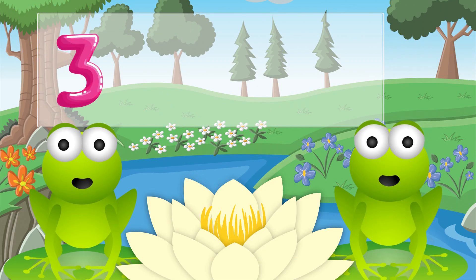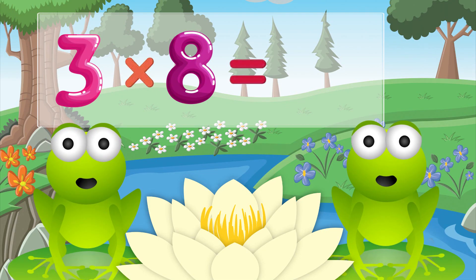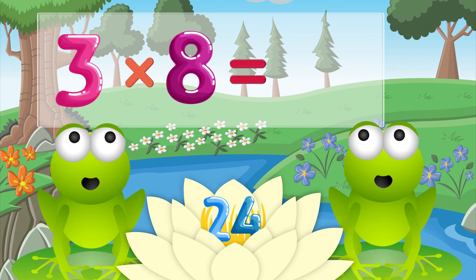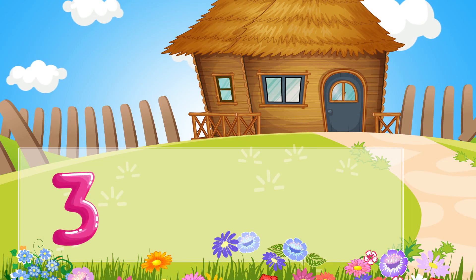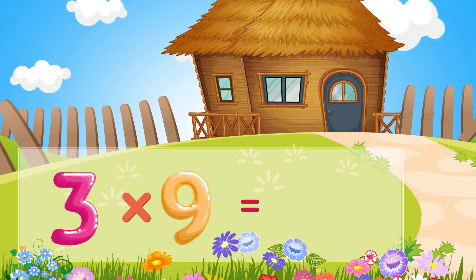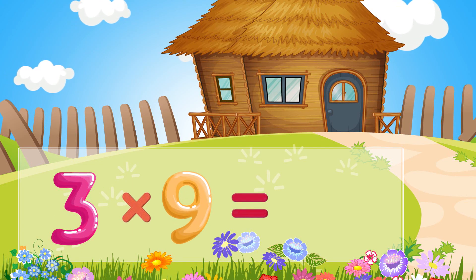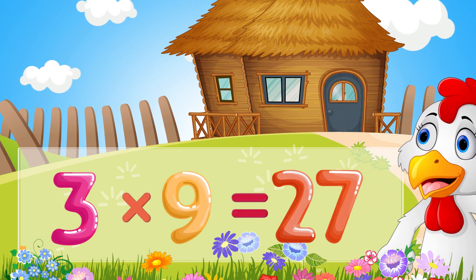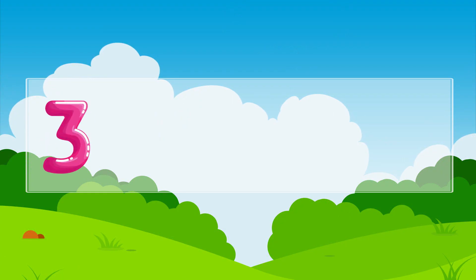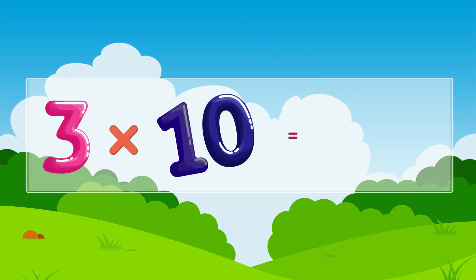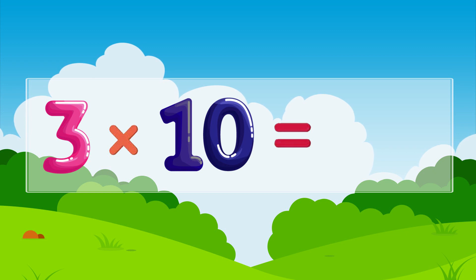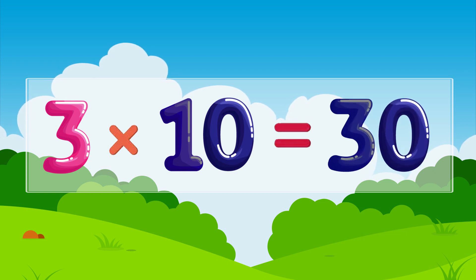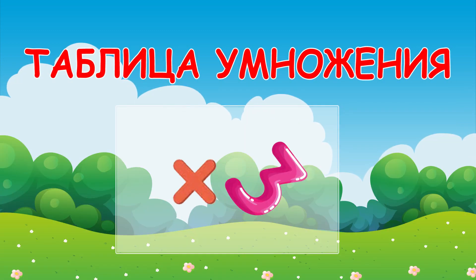Three times eight is twenty-four, three times nine is twenty-seven, three times ten is thirty. Well done!